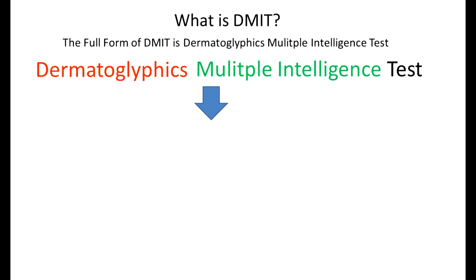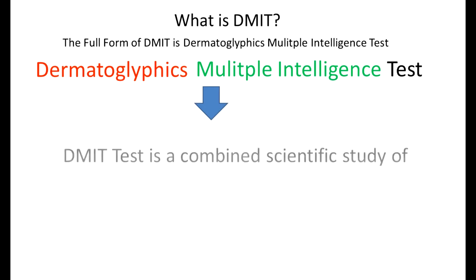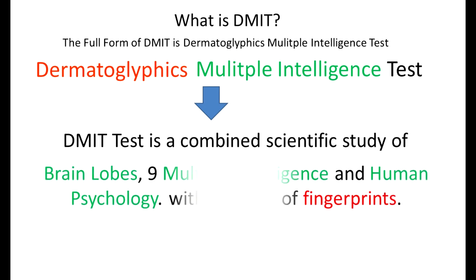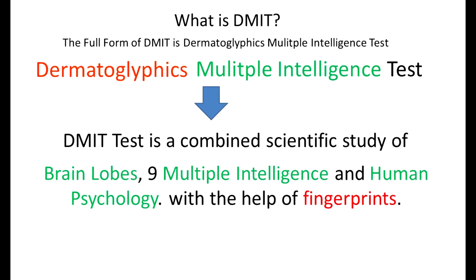DMIT test is a combined scientific study of brain lobes, nine multiple intelligences, and human psychology which we do in counseling. All these studies are conducted with the help of fingerprint patterns.